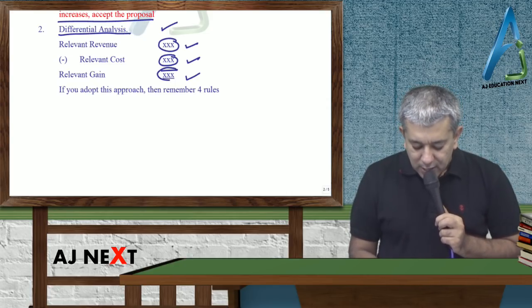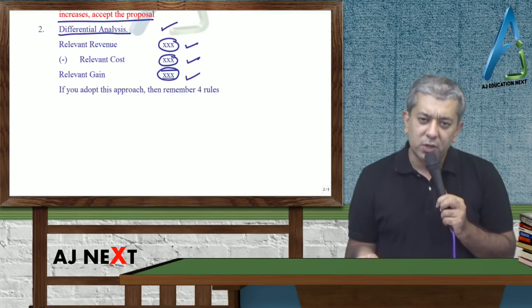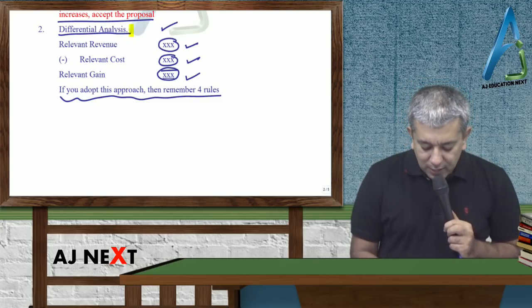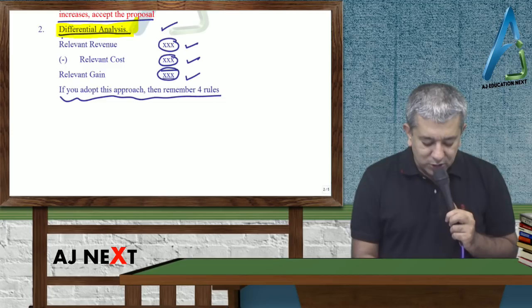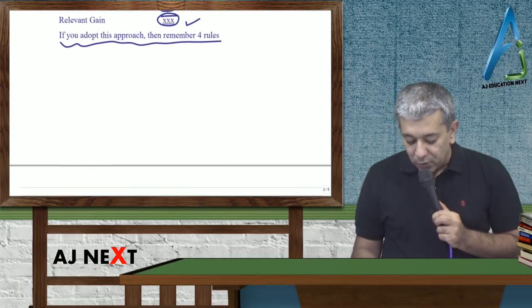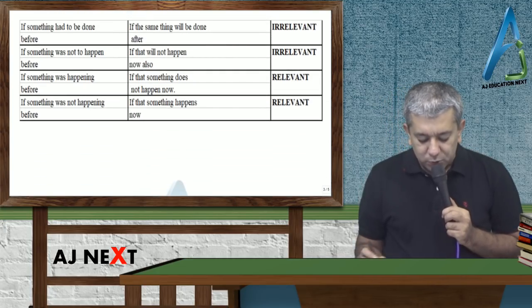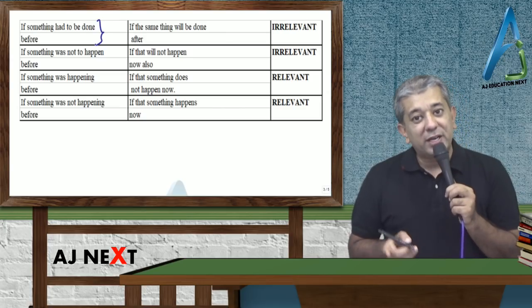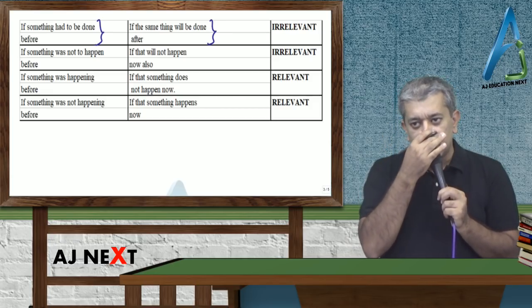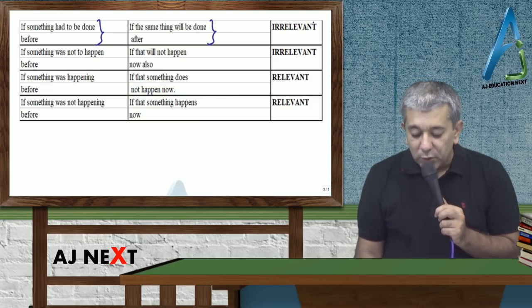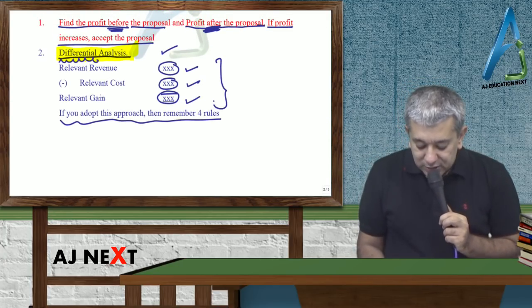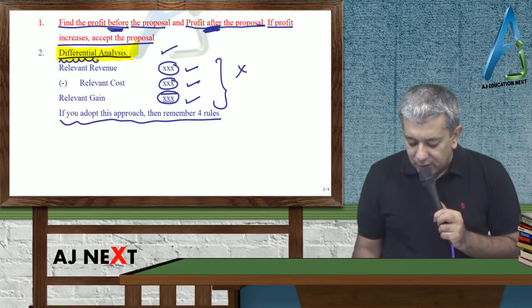Differential analysis matlab yeh soucho extra kiya ho raha hai. If you adopt this approach, then remember four rules. If something had to be done before, and if the same thing will be done now also, then that would be irrelevant. Irrelevant is when it will change. So these things will never come here if this thing was not the same.